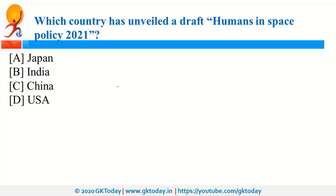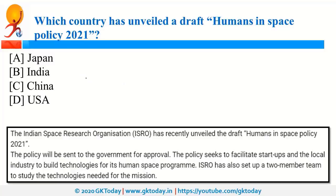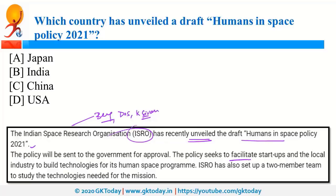ISRO — Indian Space Research Organisation, headquartered in Bengaluru and under the Department of Space, currently headed by Dr. K. Sivan — has unveiled the draft Humans in Space Policy 2021. This policy seeks to facilitate startups and indigenous industries to build technologies for ISRO's Human Space Program.